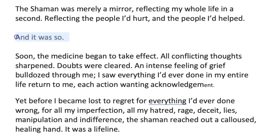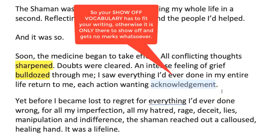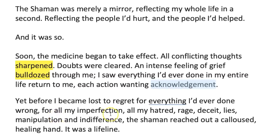She's thinking: I need to keep showing off my sentence structures, so she has a one-word paragraph. And it was so. Soon, the medicine began to take effect. All conflicting thoughts sharpened. Look at these verbs — when you think carefully about verbs, your writing becomes surprising, vibrant and true. Doubts were cleared. Another short sentence echoes that one. An intense feeling of grief bulldozed through me — there's the verb again. I saw everything I'd ever done in my entire life return to me. Each action wanting acknowledgement. This vocabulary works with the idea of the silent shaman, just waiting for her to start thinking about herself differently. Yet, before I became lost to regret for everything I'd ever done wrong, for all my imperfection, all my hatred, rage, deceit, lies, manipulation and indifference — love that list.